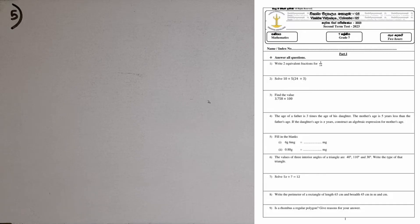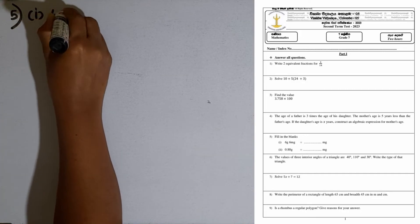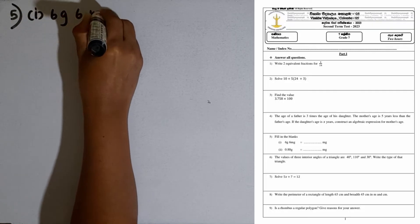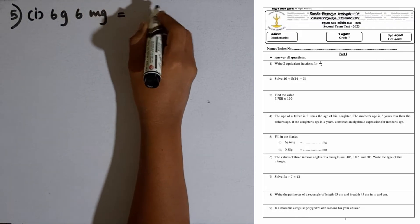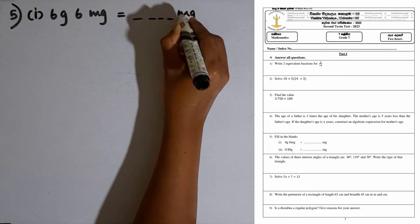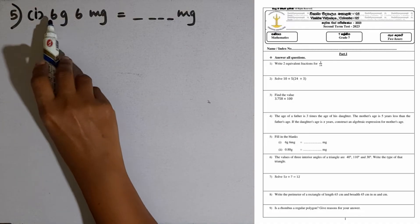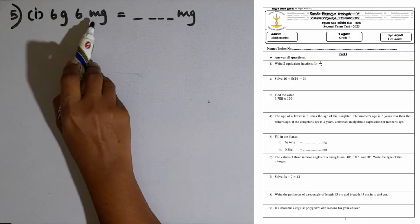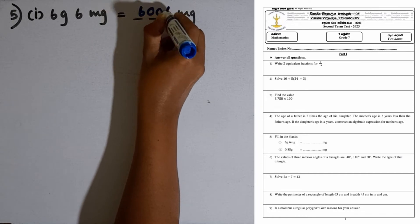Question number 5. Fill in the blanks. First, we are given 6 grams 6 milligrams, and we have to convert this into milligrams. 1 gram is equal to 1000 milligrams, so 6 grams equals 6000 milligrams. 6000 plus 6 is 6006 milligrams.